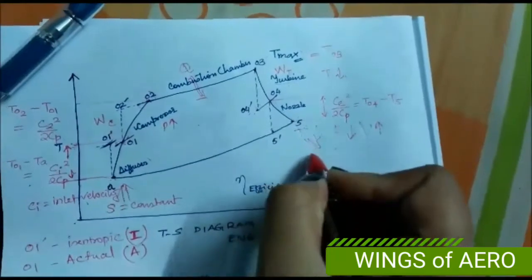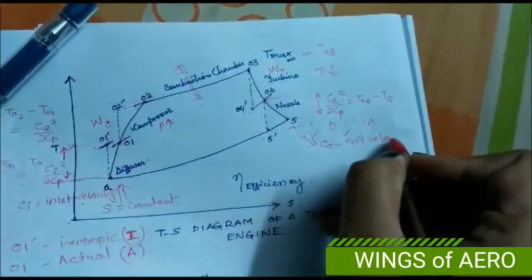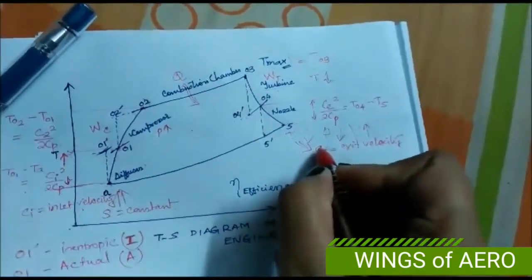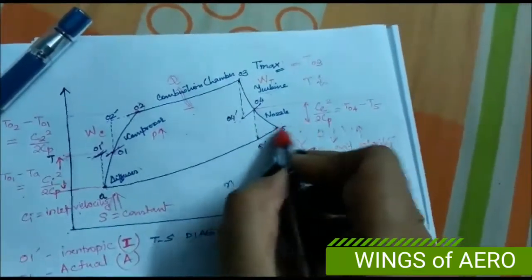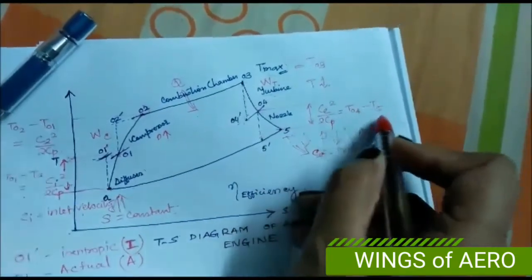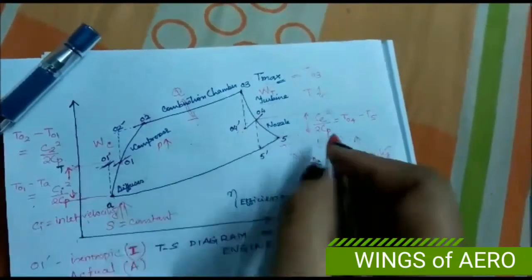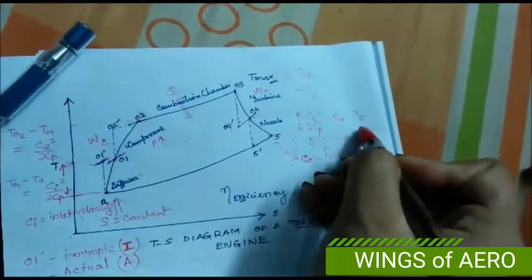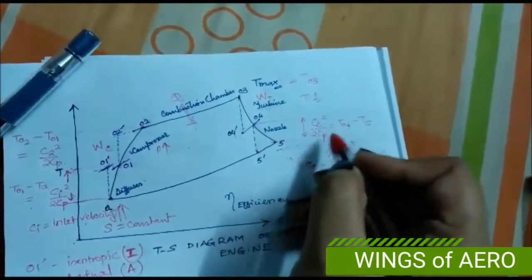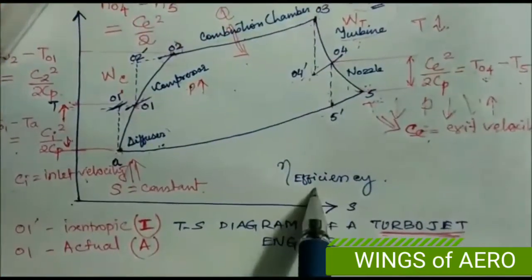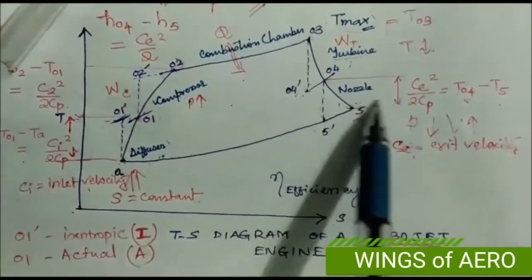Similarly, at the nozzle exit, C_e is the exit velocity. The difference T04 − T5 (actual values, not isentropic) equals C_e² / (2·C_p). This gives the relationship between temperature drop across the nozzle and the exit velocity of the gas.